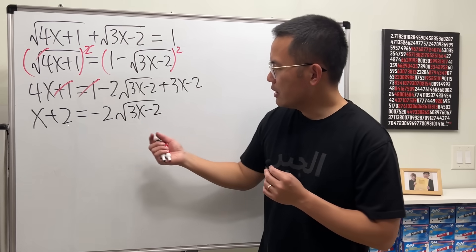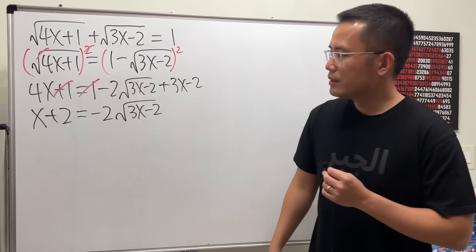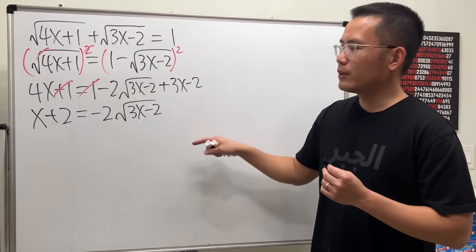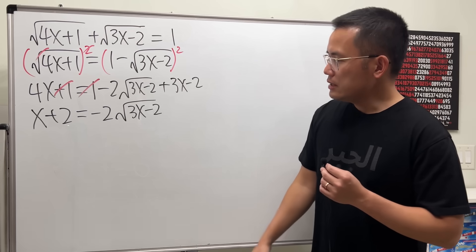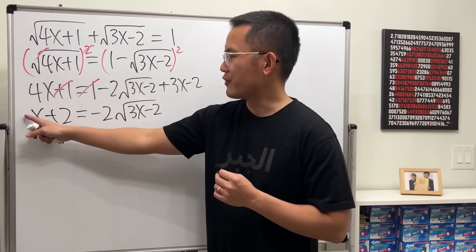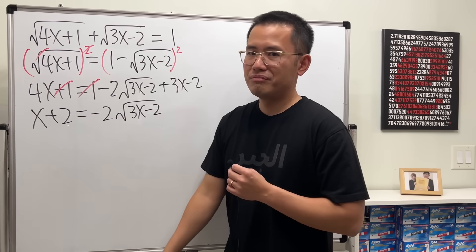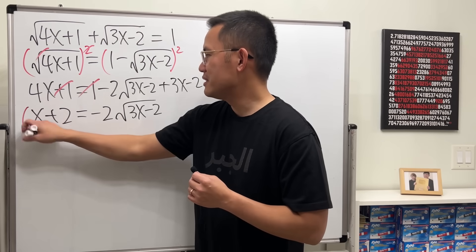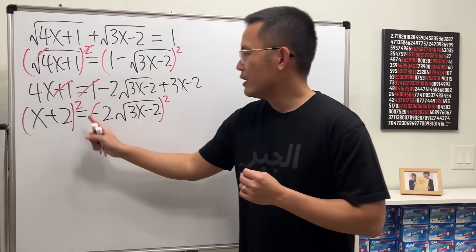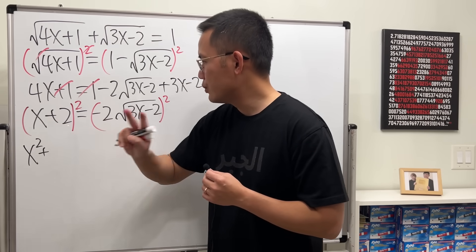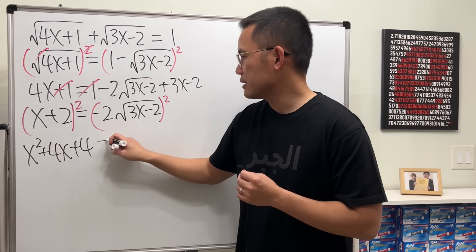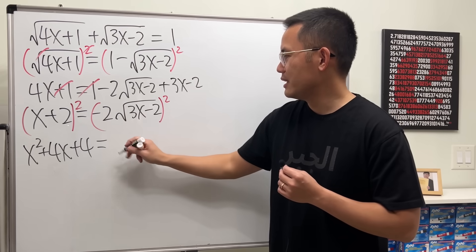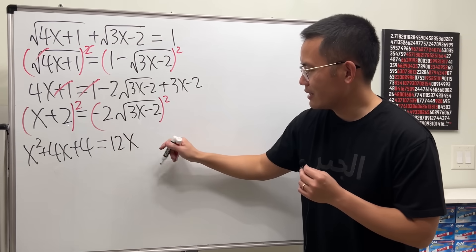You might wonder: is it because we have this negative here that we end up with no solution? Well, on the left-hand side we have x and we don't know what x is yet, so we can't say that yet. We still have to square both sides. It's okay to divide both sides by negative 2, but you end up with a fraction, so it's easier to just square both sides here. Expanding: x squared plus 4x plus 4 equals 4 times 3x minus 2, which is 12x minus 8.